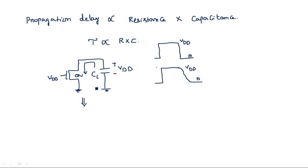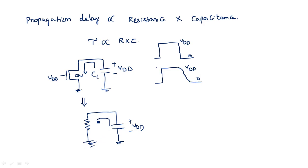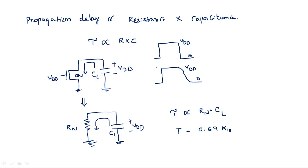The equivalent model of this network is that the transistor is replaced by a resistor. A transistor in saturation is replaced by a resistor in its equivalent model. We have a capacitor with potential VDD across it, and the capacitor discharges through this resistance. For an NMOS transistor we take the resistance Rn, so the time constant is proportional to Rn multiplied by CL, the load capacitance.